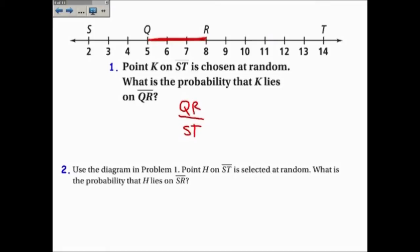The length of QR is the number of intervals. So it's 1, 2, 3. Or more simply, 8 minus 5 is 3, divided by ST.